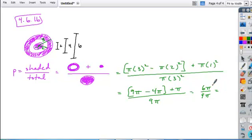Reducing the fraction, the pis cancel. 6 and 9 have a common factor of 3, giving us 2/3. So there's a 2/3 likelihood of picking a point in the shaded region.